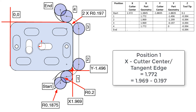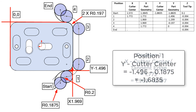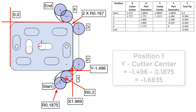At position 1, the X center of the cutter value will be the same as the X of the part geometry: 1.772. The Y for the cutter center at position 1 will be negative 1.496 minus the cutter radius, which equals negative 1.6835.